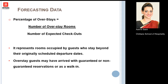The percentage of overstays: an overstay is when a guest stays beyond their scheduled departure date. The overstay guest may have arrived with a guaranteed or non-guaranteed reservation, or as a walk-in, but is checking out beyond their expected departure date. The formula is: number of overstay rooms divided by the number of expected checkouts.